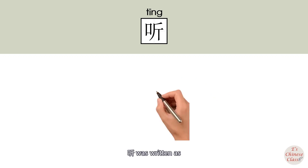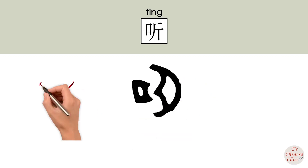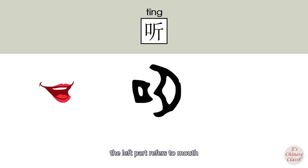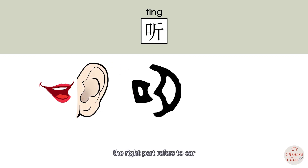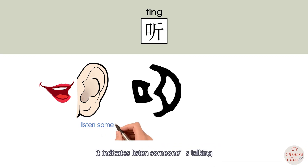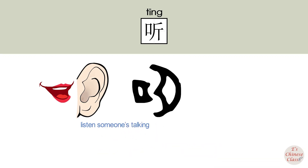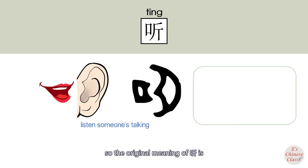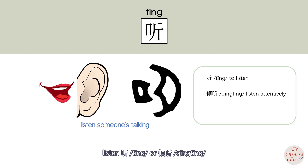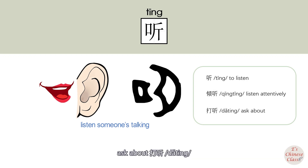In ancient Chinese, tíng was written with the left part referring to mouth and the right part referring to ear. It indicates listening to someone's talking. So the original meaning of tíng is 'listen.' The extended meaning is 'ask about,' as in dà tíng.